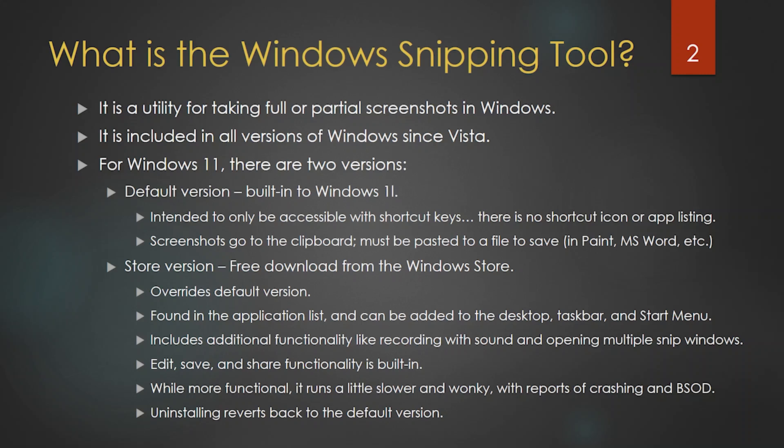When you download the store version you'll be able to see it in the application list, and from there you can put the snipping tool somewhere more useful like the desktop, the taskbar, or even pin it to the start menu. The store version includes additional functionality like being able to record with sound and open multiple snip windows. You can also use the store version to edit, save, and share your snips.